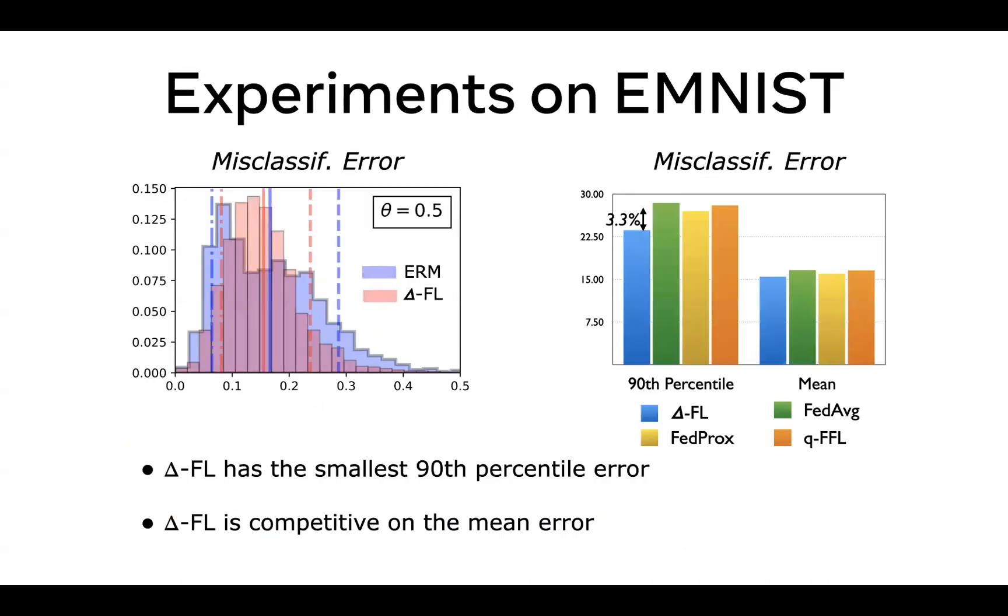Experimentally, we observe thinner tails on the error for simplicial FL as opposed to the ERM model. In this figure on the left, the right tail of the misclassification error is much thinner for simplicial FL, indicating improved performance on non-conforming users.